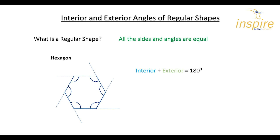We also have an angle called the exterior angle. What we've done is extended that line — the base here — so you can see this line is a straight line. The angle on the outside is what we call an exterior angle. It also has six exterior angles. You extend each line and then you can draw them in, and you can see it has six exterior angles as well.